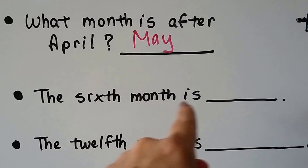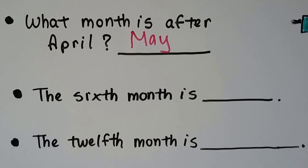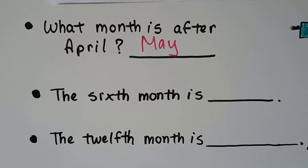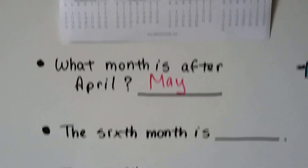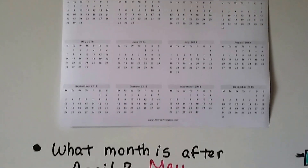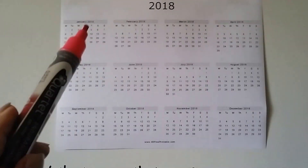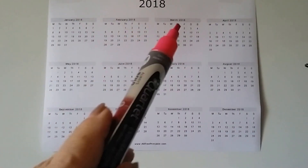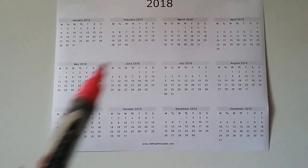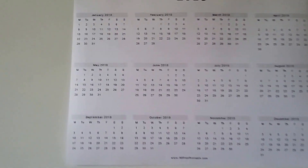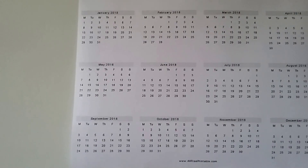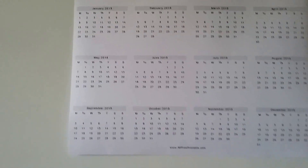What is the sixth month? All we have to do is count to six: one, two, three, four, five, six. The sixth month is June.